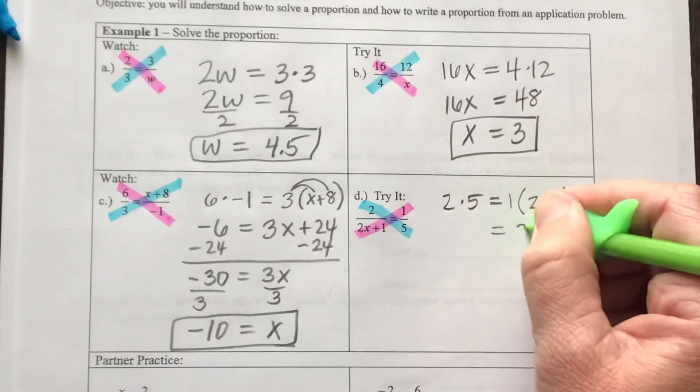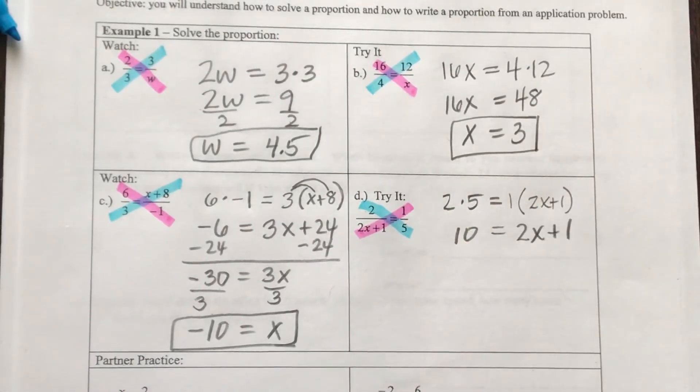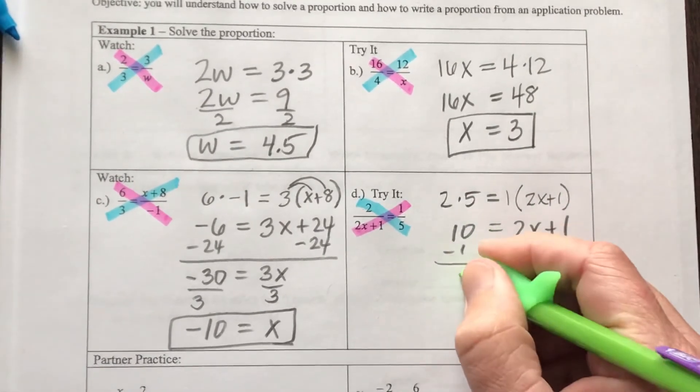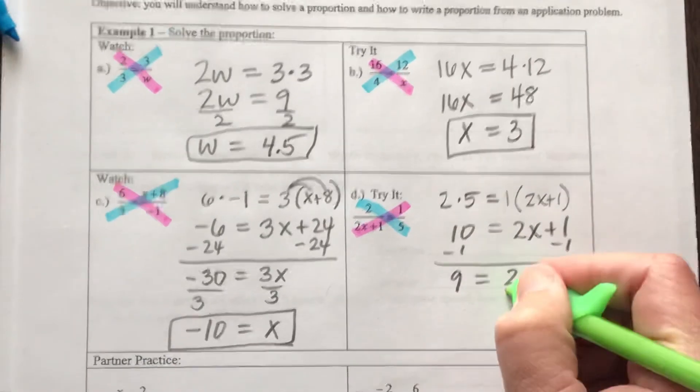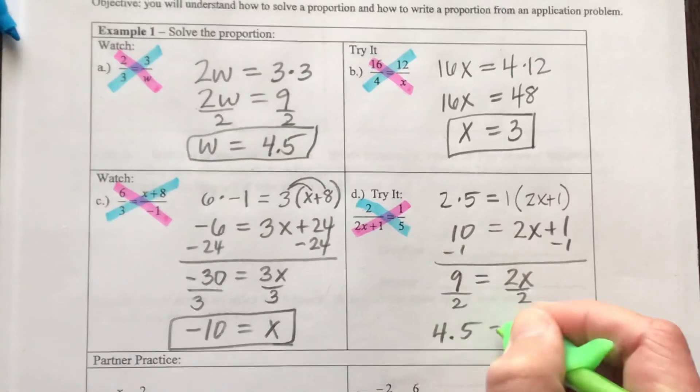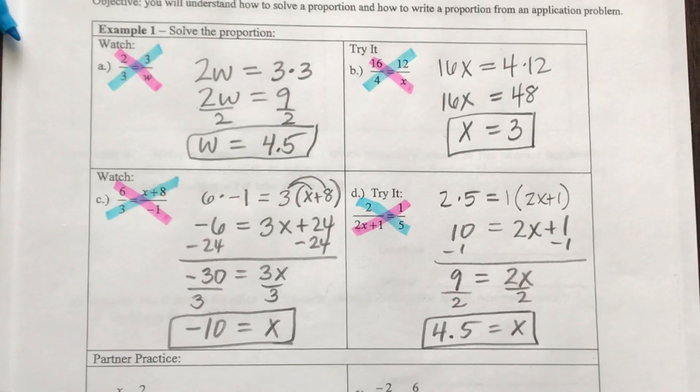Well, if I distribute 1, I'm going to get what I had, 2X plus 1. And that's going to equal 10. So now if I subtract 1 on both sides to get my X term isolated, I'll have 9 is equal to 2X. And if I divide both sides by 2, I'm going to get 4 and a half is equal to my X. Or you could leave it 9 over 2.